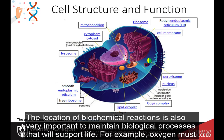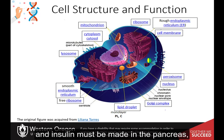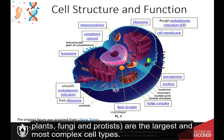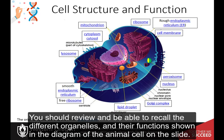The location of biochemical reactions is also very important to maintain biological processes that will support life. For example, oxygen must be taken up by the lungs and delivered to all the cells of the body, and insulin must be made in the pancreas and delivered to the liver when blood glucose levels are high. Thus, cells are highly organized places. Eukaryotic cells — the cells of animals, plants, fungi, and protists — are the largest and most complex cell types. Since they are so large, they contain small compartments called organelles that do specialized functions. You should review and be able to recall the different organelles and their functions shown in the diagram of the animal cell on this slide.